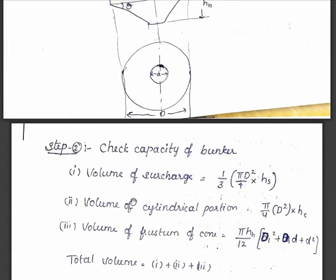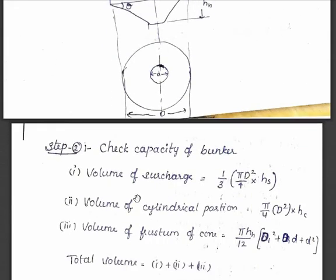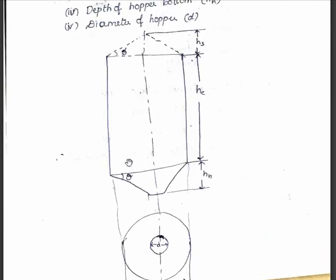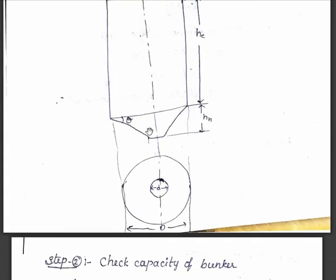We have to check the total volume against the volume we calculated. The volume of the such as portion is one-third of pi d-squared by 4 into Hs, where Hs is the height of the such as. The volume of the cylindrical portion is pi d-squared by 4 into the height of the cylindrical portion — simply the volume formula for a cylinder. The volume of the frustum of the cone at the bottom uses the formula: pi h by 12 into (D-squared plus D into d plus d-squared).